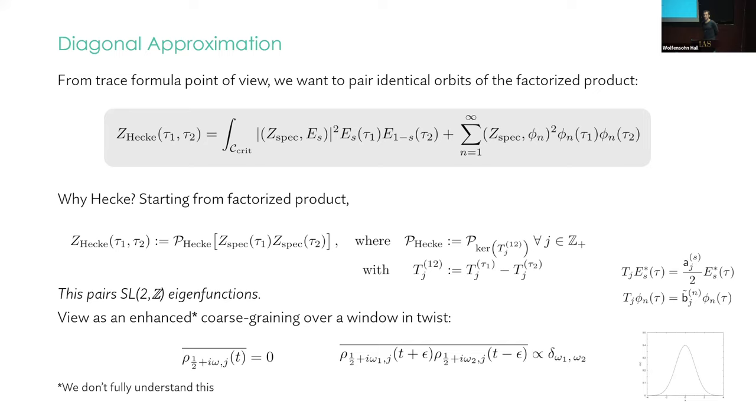We don't fully understand how to get this in the sense of coarse graining, say, over energies. If you coarse grain over energies, you pair eigenvalues. But the cusp forms sit on the critical line. So there are degeneracies between cusp forms and Eisenstein series at those values where the cusp forms live. So to kill these cross terms, you need to use this Hecke projection. But we'd like to understand this better from the microcanonical point of view, of course graining.